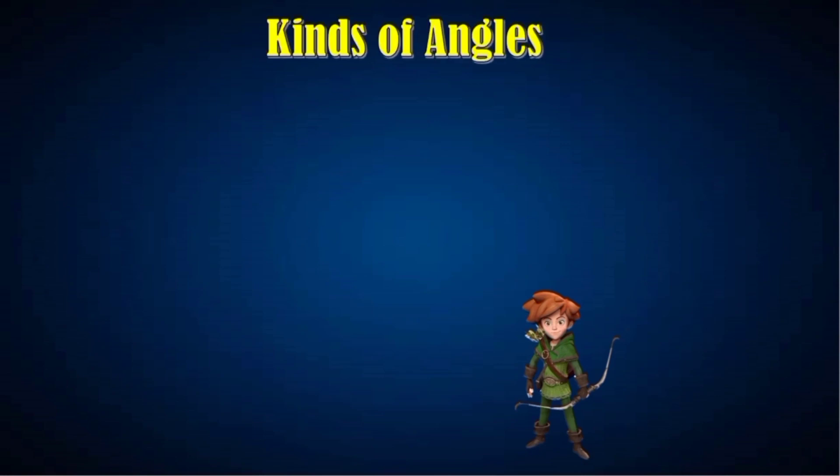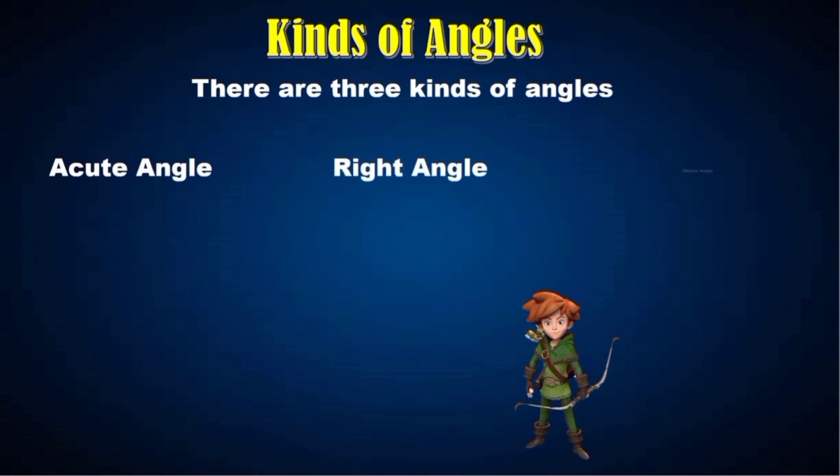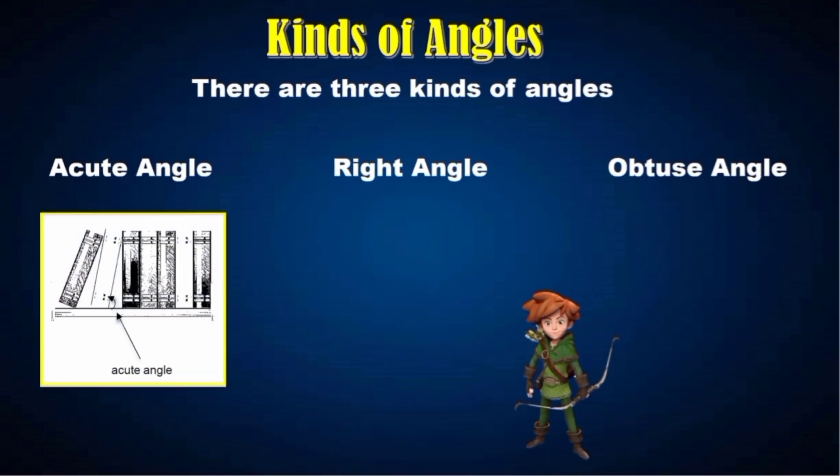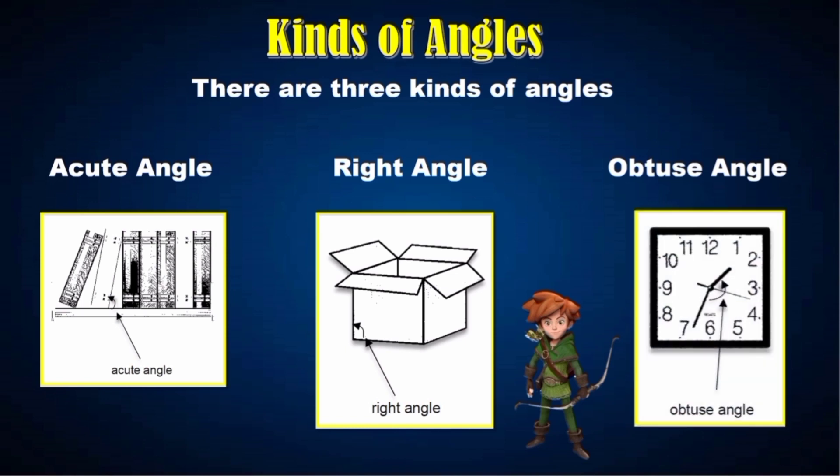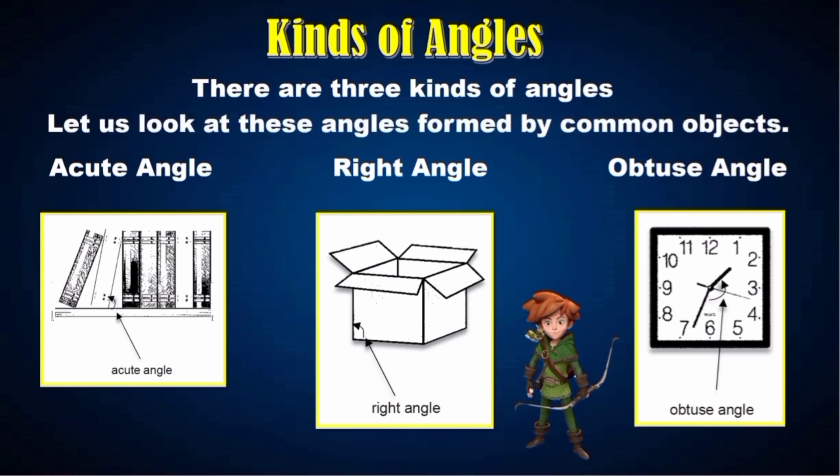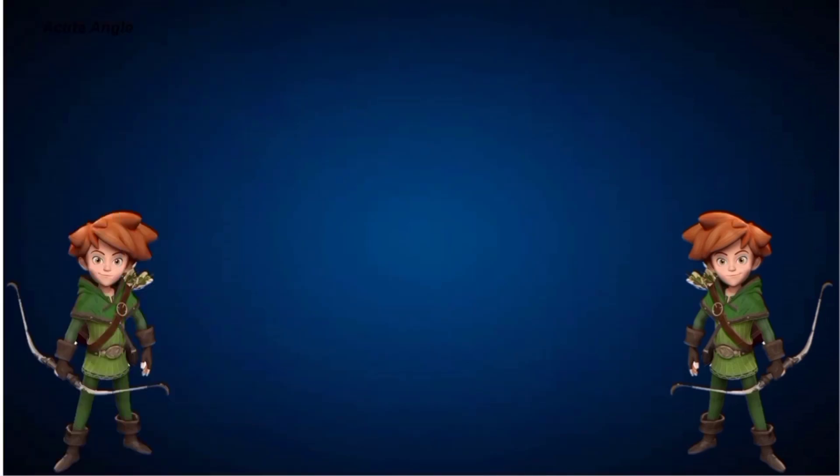Kinds of Angles. There are three kinds of angles: acute angle, right angle, and obtuse angle. Now let's use different models to represent the kinds of angles. This is acute angle, this one is a right angle, and this is an obtuse angle. Let us look at these angles formed by the common objects.